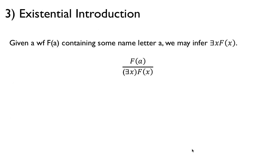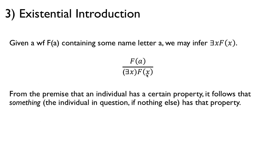Here's the third rule: existential introduction. This one is easy. It says that if we have f of a, where a is any element, then we certainly have there exists x, f of x. From the premise that an individual has a certain property, it follows that something has that property — there might be more than one, but at least we know there's at least one. So there exists x, f of x.